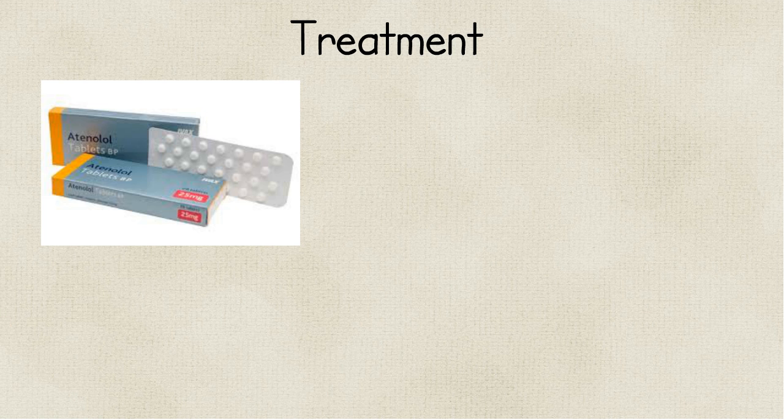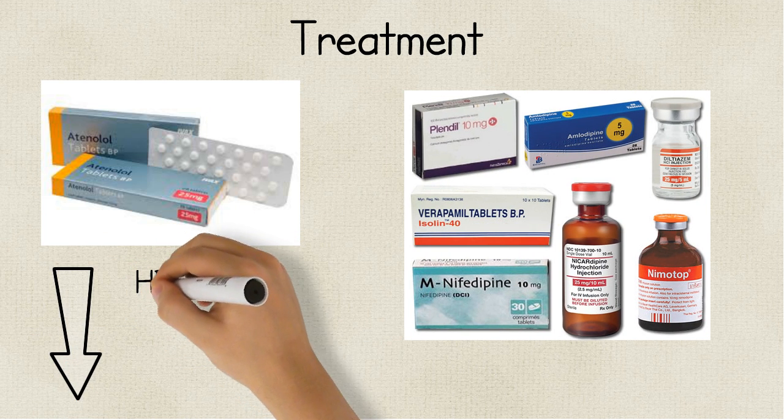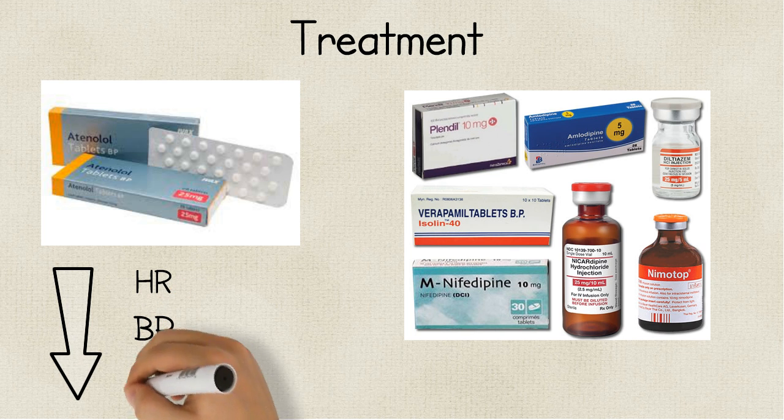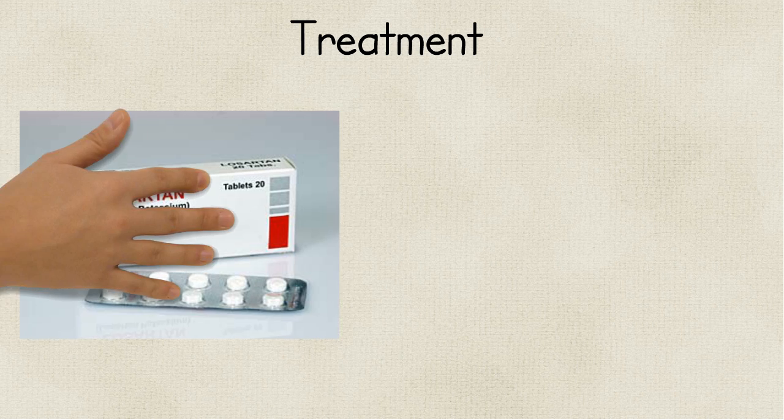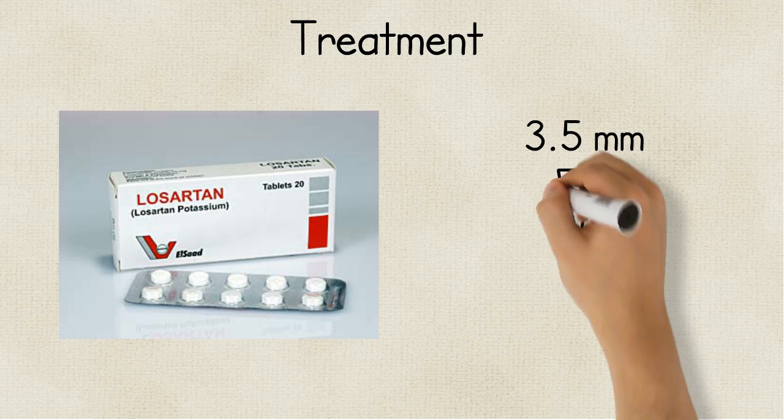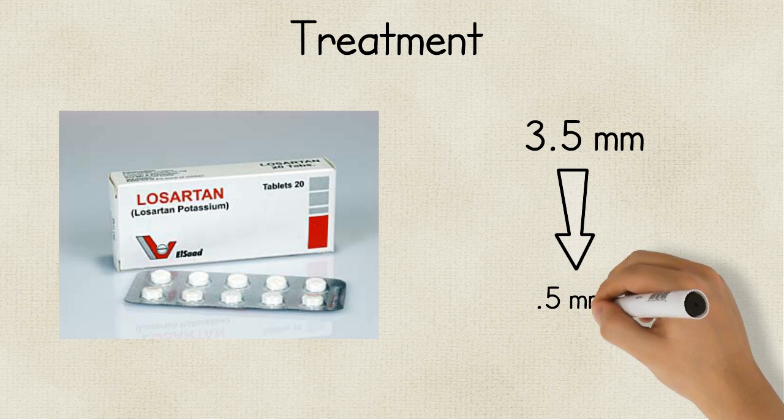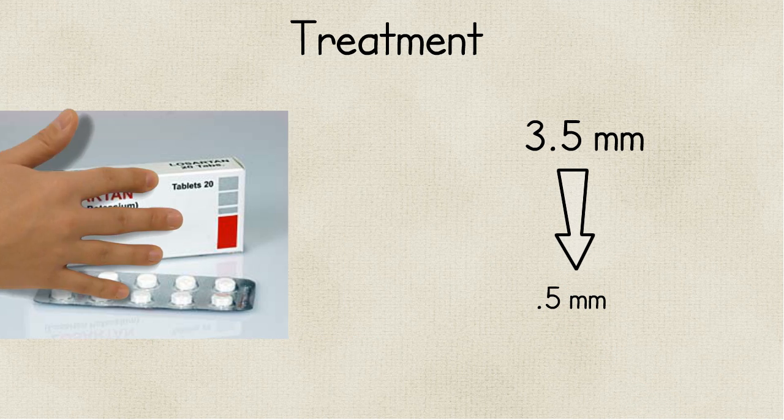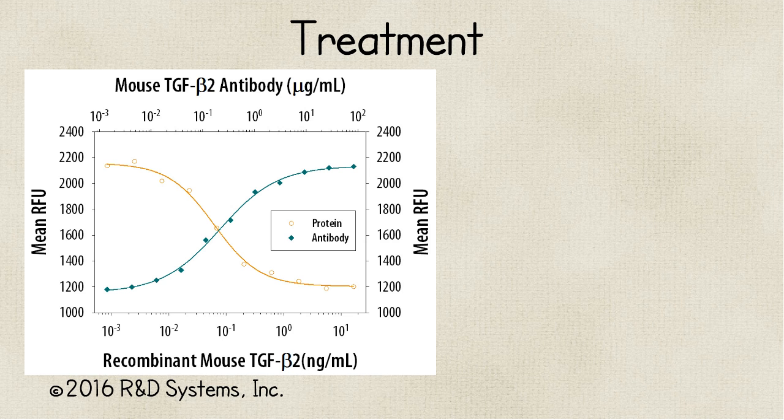There are a few medications that are often prescribed to patients, including beta blockers and calcium channel blockers, that decrease the heart rate and blood pressure, which in turn will minimize the load on the ascending aorta. Some recent studies using Losartan, which is meant to lower blood pressure, also showed that it slowed the rate of aortic dilation per year from 3.5 to 0.5 millimeters in some patients. There are also current experiments with TGF Beta neutralizing antibodies that have shown some promise in rat studies.